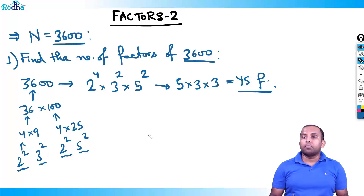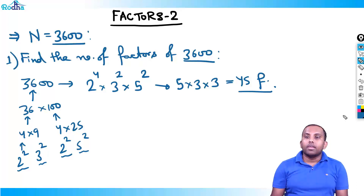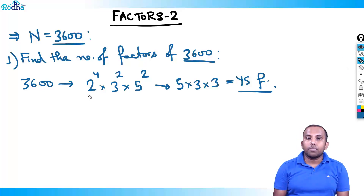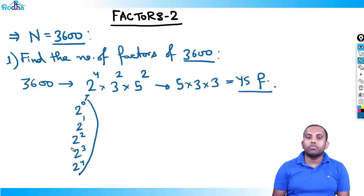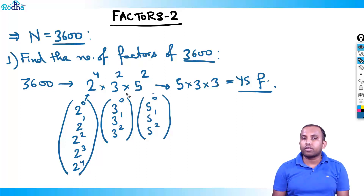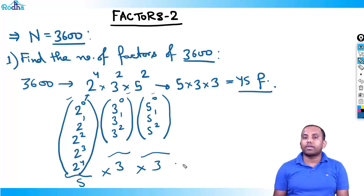Now before starting the next question, let me revise a concept from the previous video. 2⁴ can be written with 5 factors: 2⁰, 2¹, 2², 2³, 2⁴. Similarly, 3² has 3 factors: 3⁰, 3¹, 3². And 5² has 3 factors: 5⁰, 5¹, 5². So 5 × 3 × 3 = 45 factors total, by picking one term from each bracket.